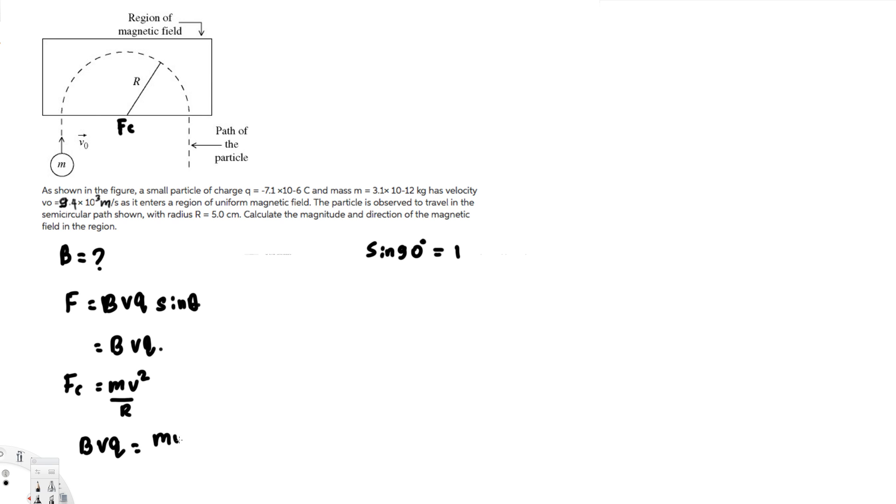We're trying to find B, so let's bring everything else to one side. B = mv²/(VQr). The V cancels with v², so we're left with B = mv/(Qr).